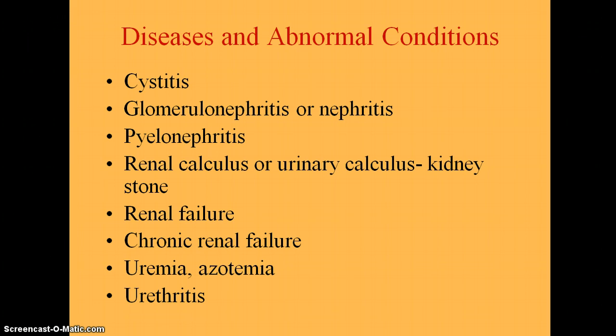Renal failure can be acute or chronic — it's when the kidneys stop functioning. Acute renal failure can be caused by hemorrhage, a blow to the area, shock, injury, poisoning, nephritis, or dehydration. Symptoms include oliguria or no urine output, headache, an ammonia smell to the breath, edema, and irregular heart rhythm. Uremia occurs when the blood accumulates waste products, which can also start to show up on the skin.